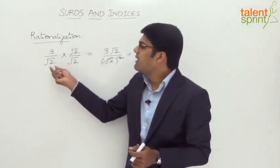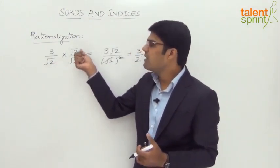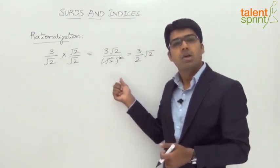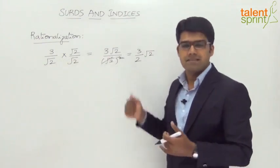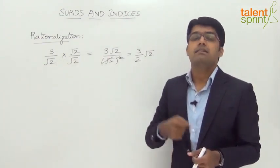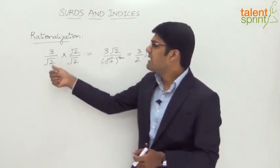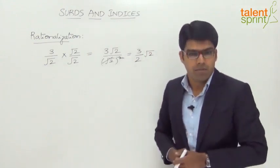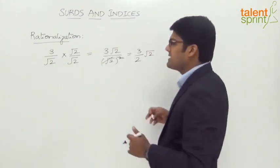Likewise, if we have root 3 in the denominator, we can multiply both numerator and denominator by root 3, so root 3 into root 3 becomes 3. Or if it is root 6, root 6 into root 6 gives us 6. Now, how about higher degrees? What if we have a cubed root or a fifth root in the denominator? Let us take an example to understand that as well.